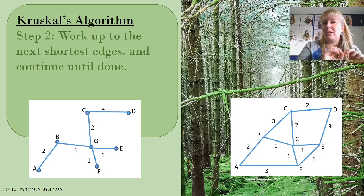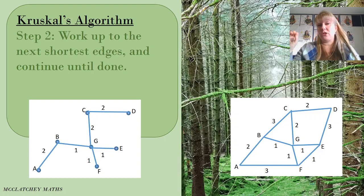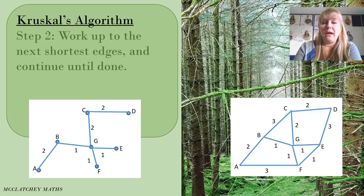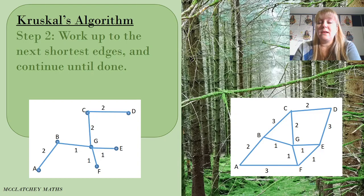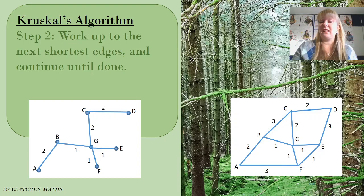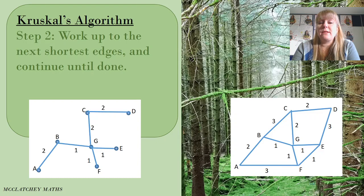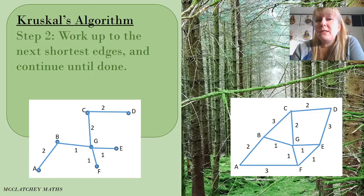The difference from Prim's is that here I'm choosing the globally shortest edges in order, rather than navigating from a vertex. After the 2s, I check the 3s. AF would create a loop so I ignore it. BC would create a loop, and DE would also create a loop — so I draw nothing for the 3s. There are no higher weightings to check, so I verify all vertices are included. The spanning tree using Kruskal's algorithm is complete.